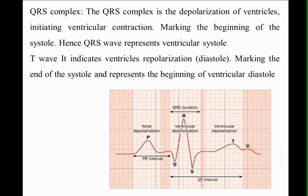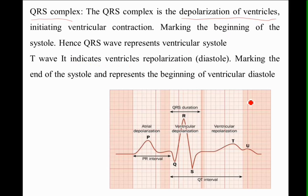The next thing we observe is the QRS complex. The QRS complex represents the depolarization of the ventricles. When blood is pumped to the ventricles, depolarization of the ventricles initiates ventricular contraction, marking the beginning of systole. Hence, the QRS wave represents the ventricular systole, while the P wave represents the atrial systole.